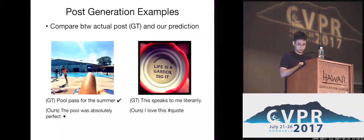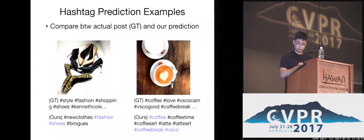These are post-generation examples. Our model also generates natural emoticons and natural hashtags. This is also a good example of hashtag prediction — our model generates hashtags related with fashion and coffee.